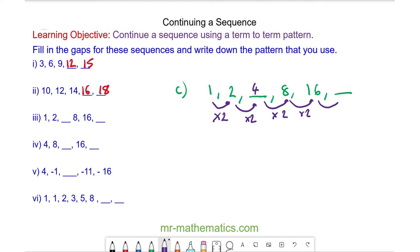8 times 2 is 16, then multiply this by 2 and we get 32. So our term to term rule is start at 1 and then double each term.